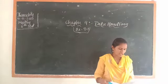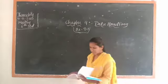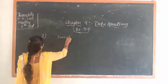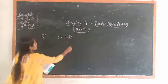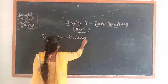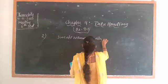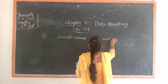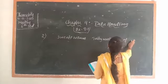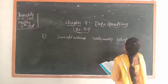First, arrange the names of sweets in the table using tally marks. In the first column, write the sweet names. Next, write the tally marks. And next, number of students — how many members will eat each sweet.